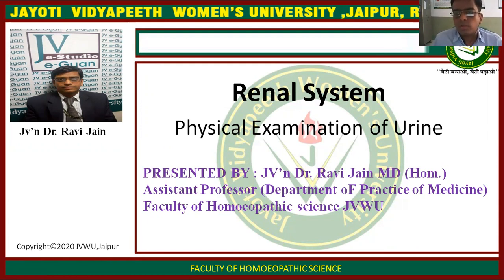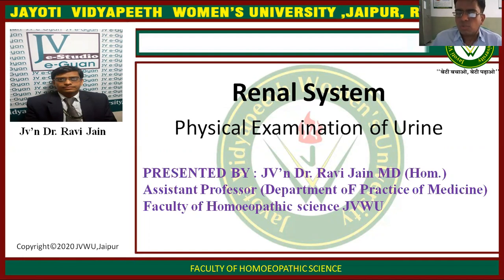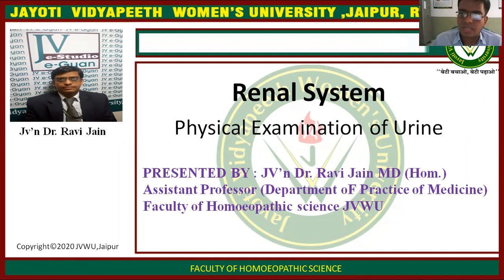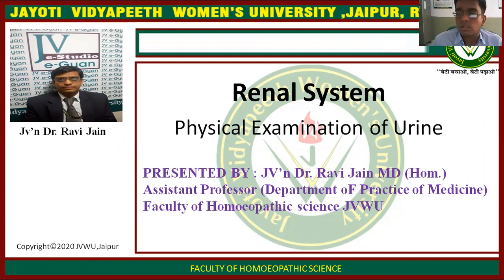Whenever a patient of immune system disorder is coming to you, and we are going to examine the patient's urine for physical examination, what are the various things that we are able to observe in the general physical examination of urine? For clearing our suspicion about the presence of any kind of immune disease, the simplest method is doing the routine physical examination of the urine. For this procedure, the first sample of the urine is taken in a sterile container. The urine is collected mid-stream — the mid-stream urine is collected as the first sample in a sterile container. That urine sample is examined for any kind of physical abnormalities for the suspected case of the disease.